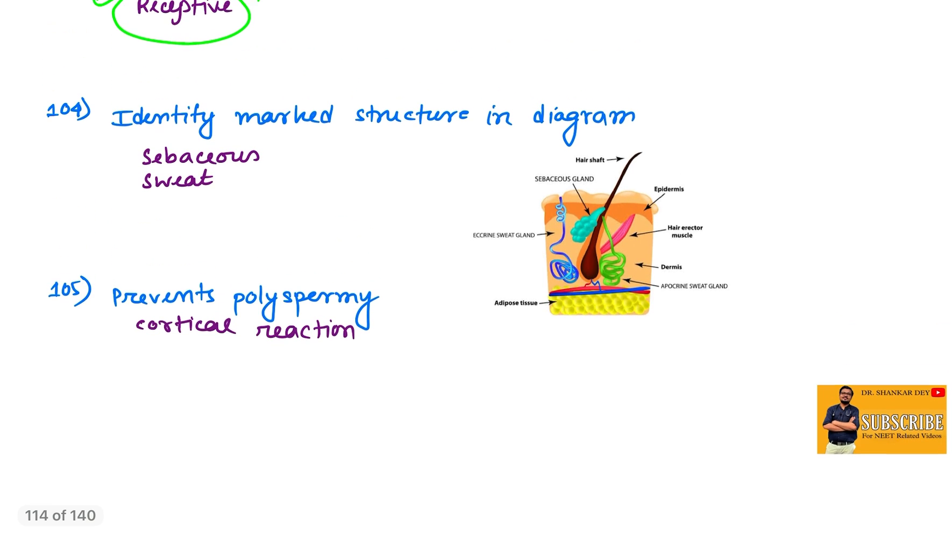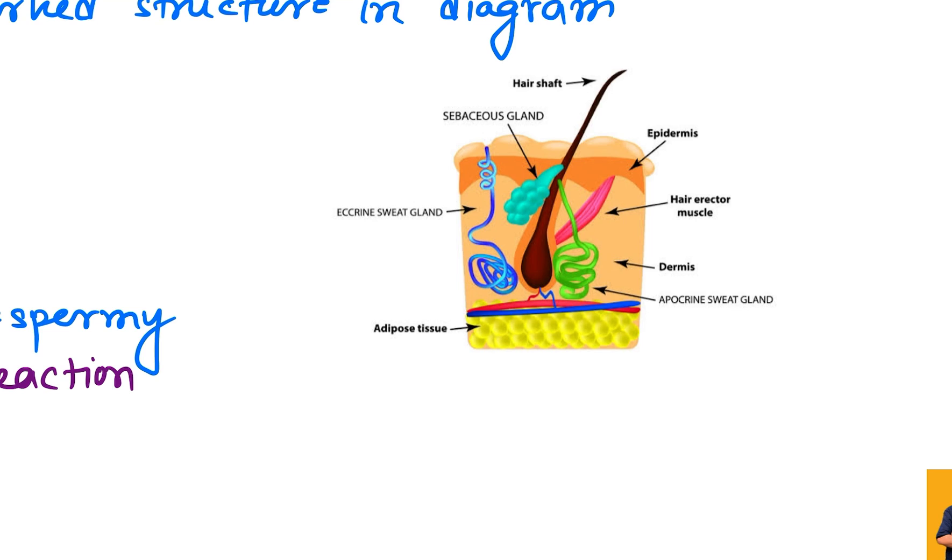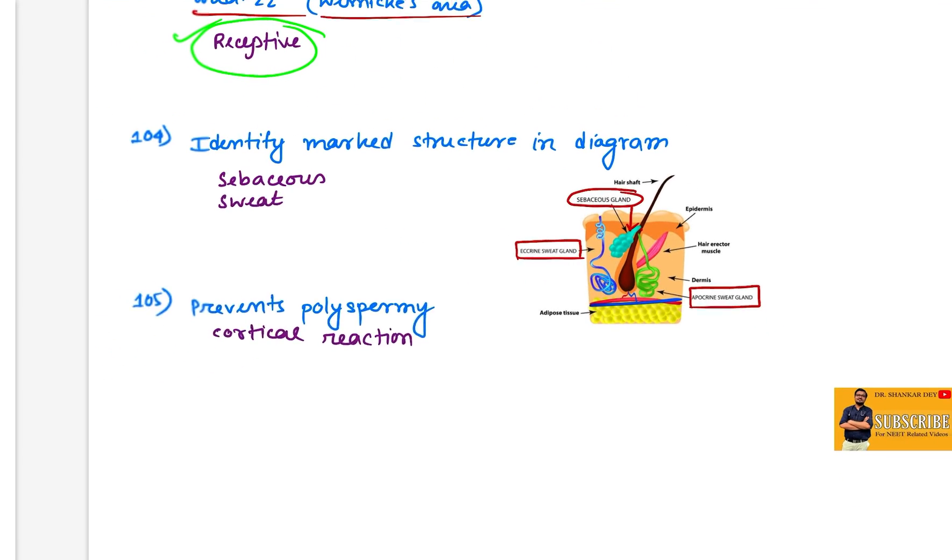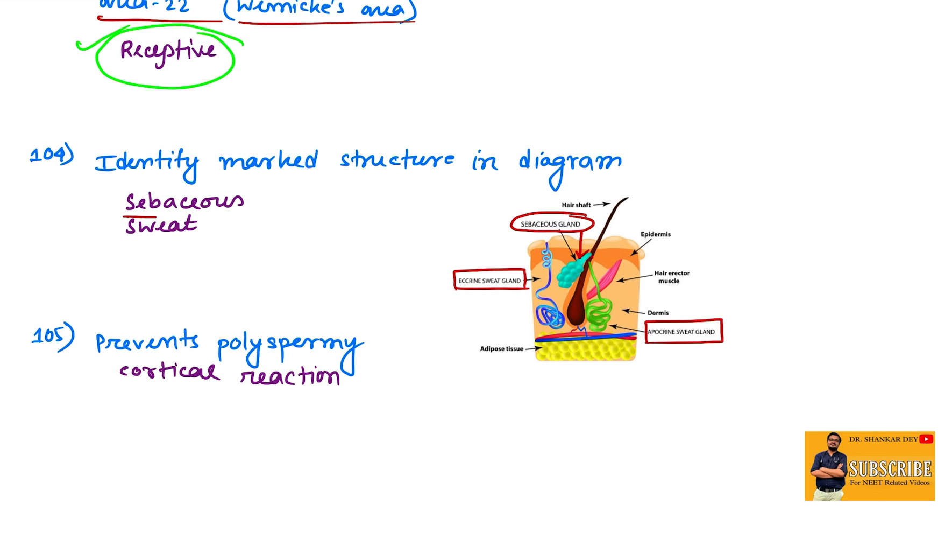Question 104: Identify the marked structure in the diagram. I don't know what the actual image was, but this is actually sebaceous gland. Here you can see one type of gland that is eccrine sweat gland and there is apocrine sweat gland. Apocrine sweat gland is draining near the hair follicle but eccrine is draining separately into the surface of the skin.